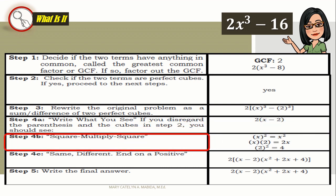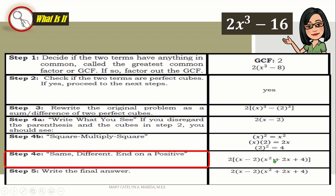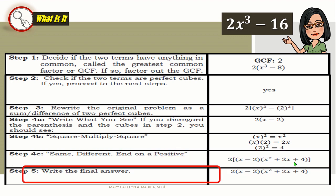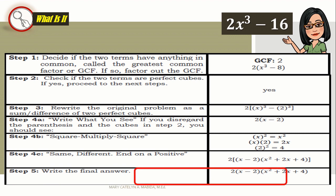Let's go to step four B: square, multiply, and square. We square x, we have x squared. We multiply x times 2, we have 2x. And we square 2, we have 4. And then, do not forget your same, same sign, different sign, and always end on a positive. And that's it. That is your final answer.